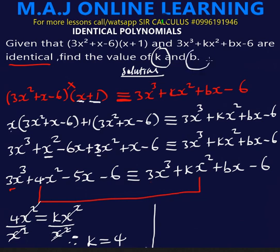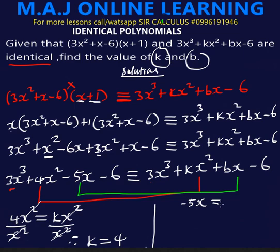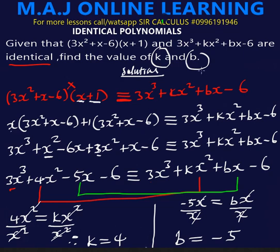Now we find the value of b. On the left side we have −5x, and on the right side we have bx. So −5x = bx. We divide both sides by x, the x terms cancel, and therefore b = −5. So the value of k is 4 and the value of b is −5. Substituting these values confirms that the first expression is identical to the second expression.